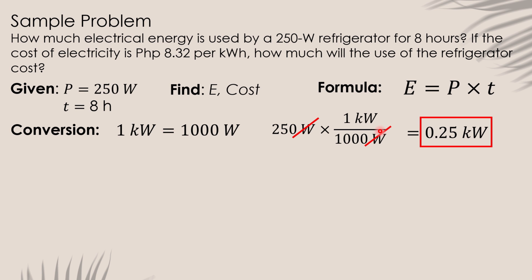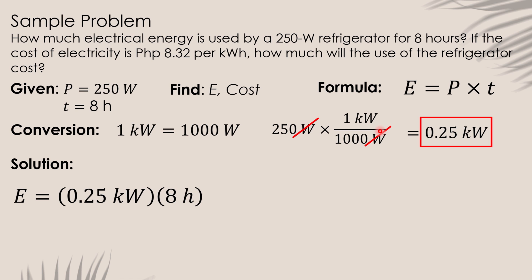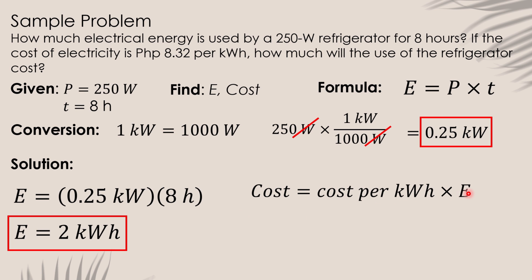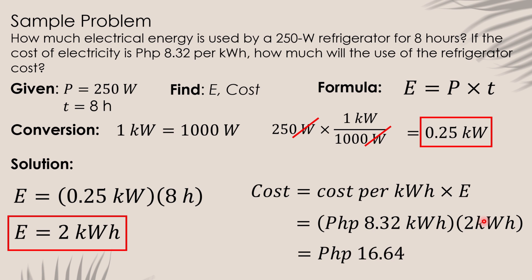Now let us calculate the energy. Substituting into our formula: E = P × T = 0.25 kilowatt × 8 hours = 2 kilowatt-hours. Now that we have the energy, let us calculate the cost. To find the cost, multiply the cost per kilowatt-hour by the energy used: 8.32 pesos × 2 kilowatt-hours = 16.64 pesos. That is our final answer.